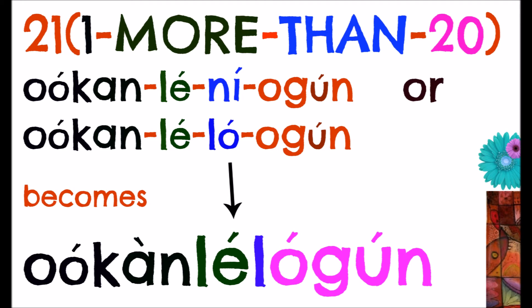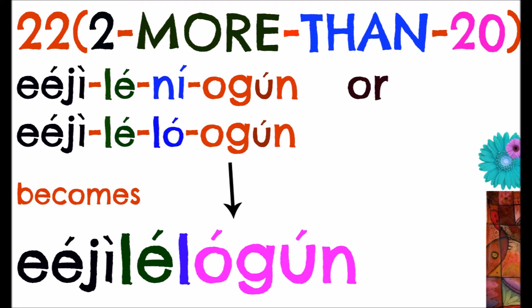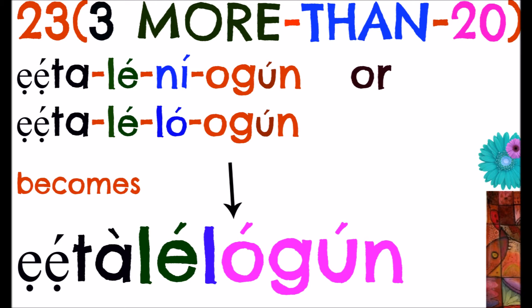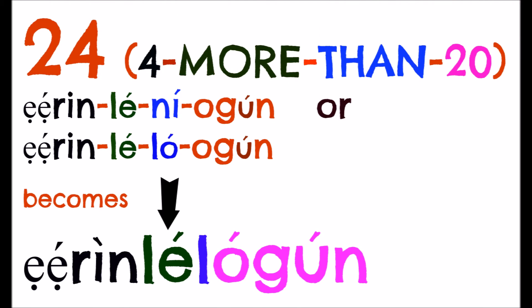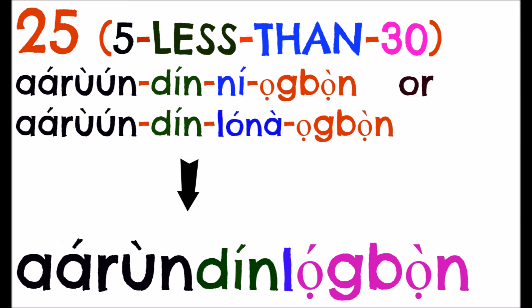Twenty-one becomes 'one more than twenty' — 'okan le ni ogun' or 'okan lelogun.' Twenty-two is 'two more than twenty' — 'eji lelogun.' Twenty-three is 'three more than twenty' — 'eta lelogun.' Twenty-four is 'four more than twenty' — 'erin lelogun.' If you look closely at twenty-five, you will notice some changes.